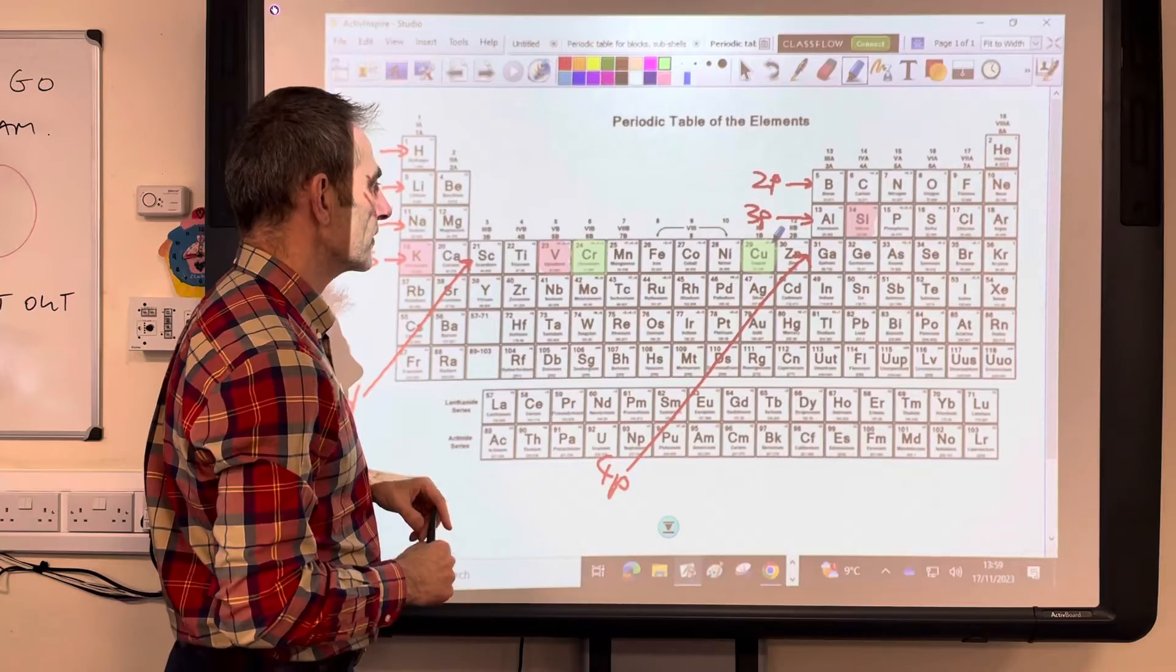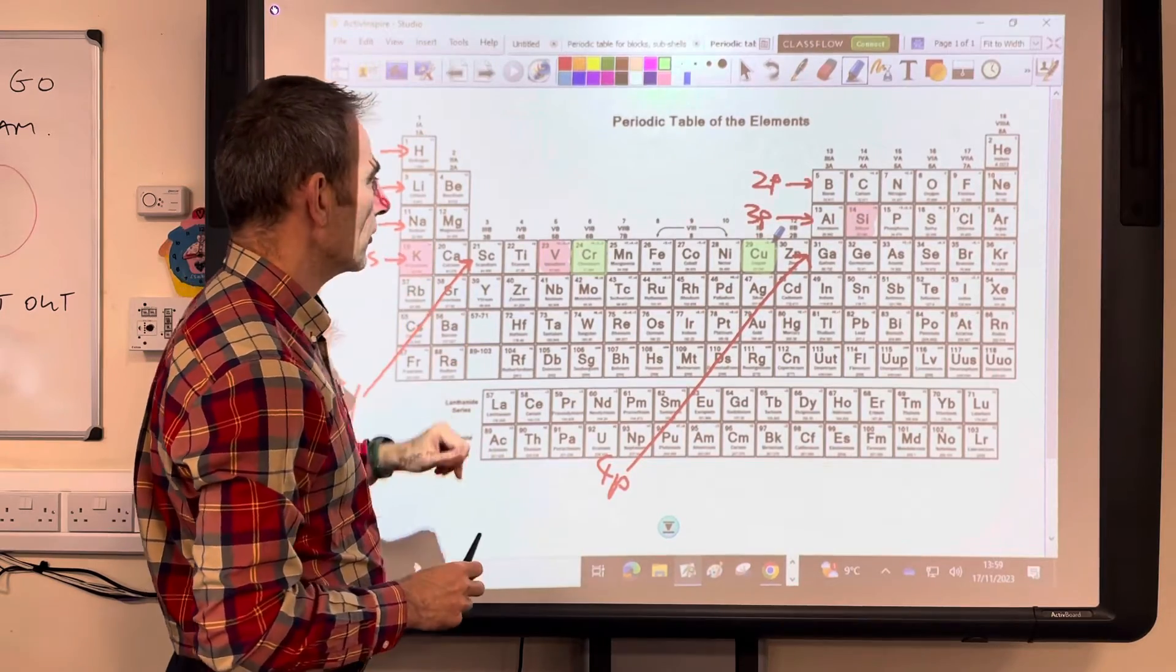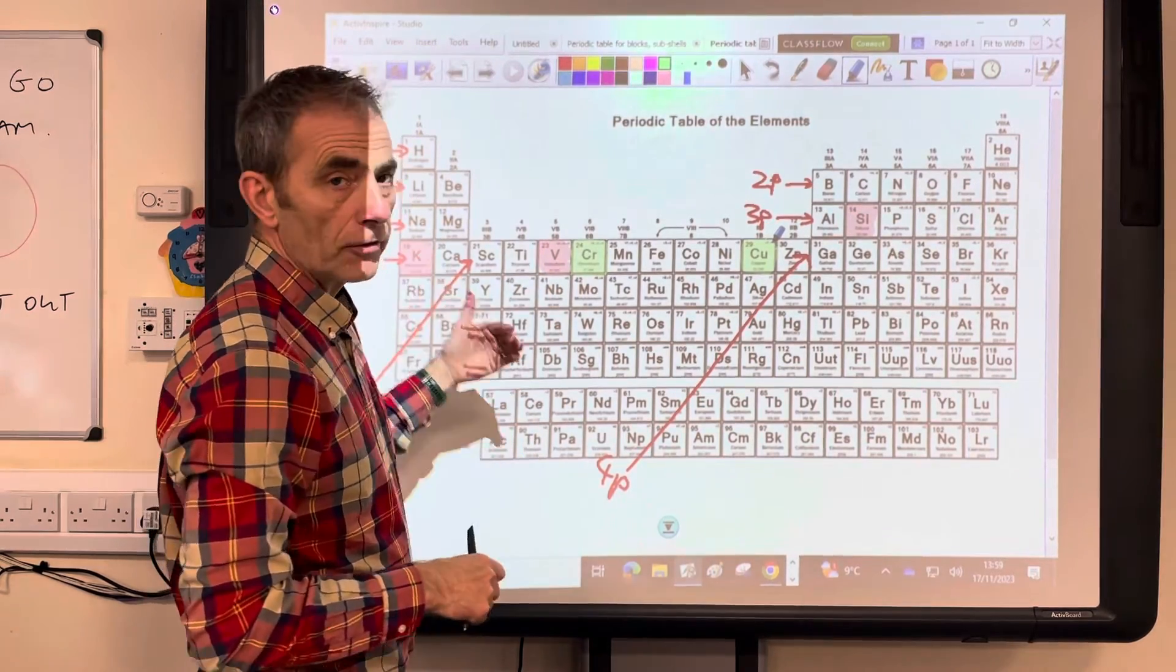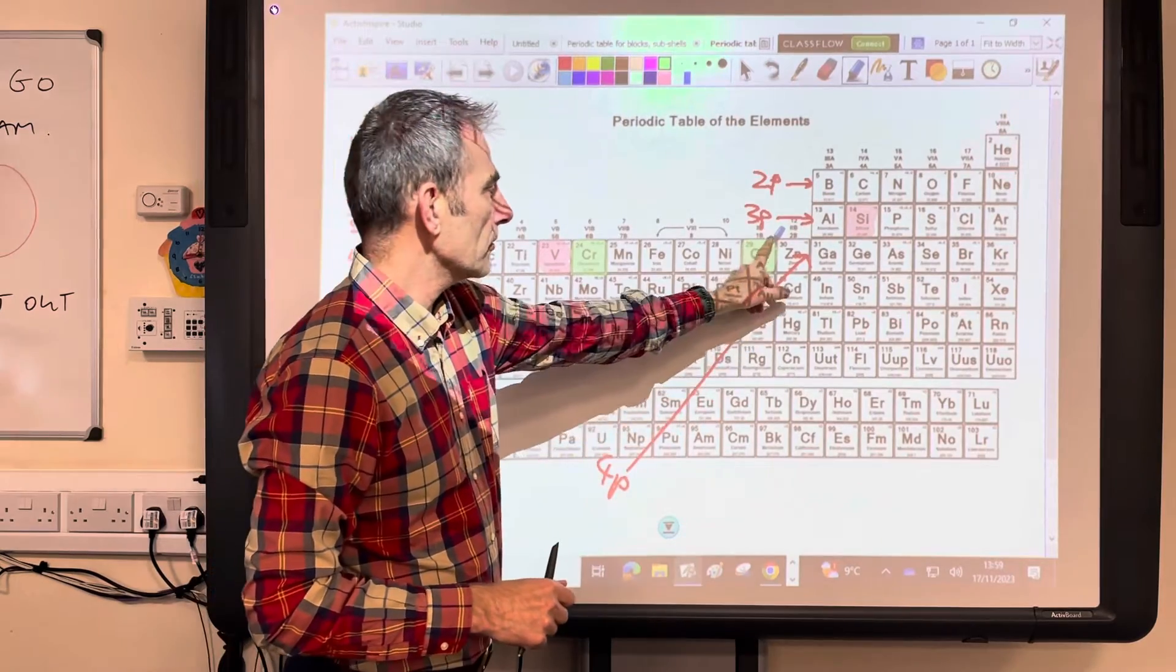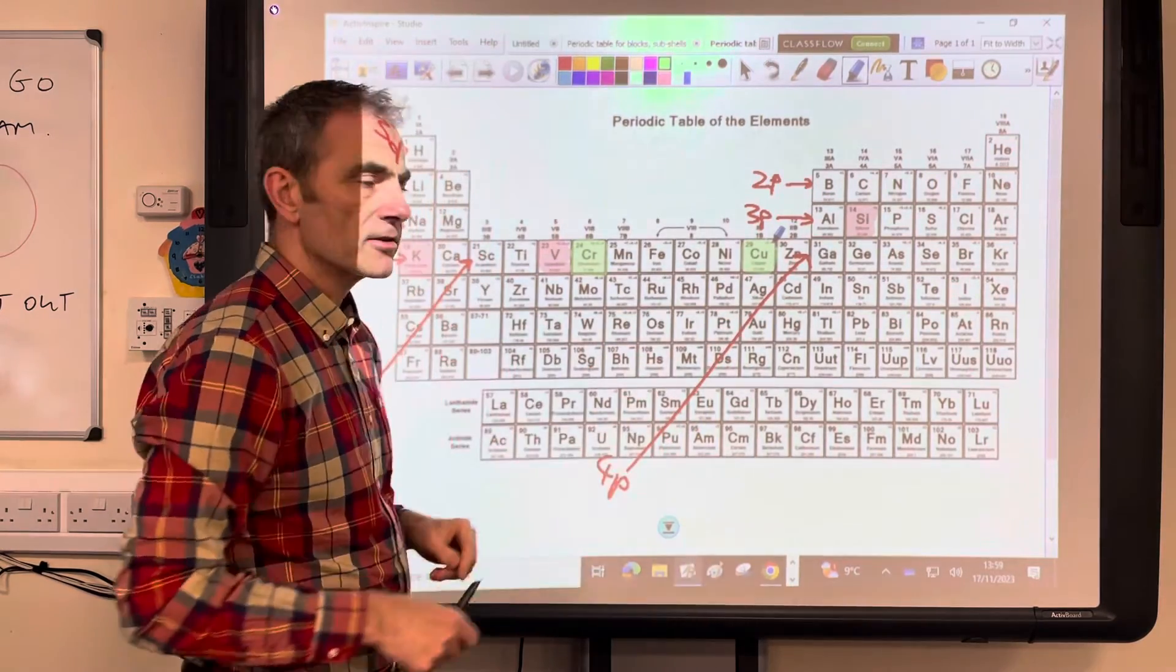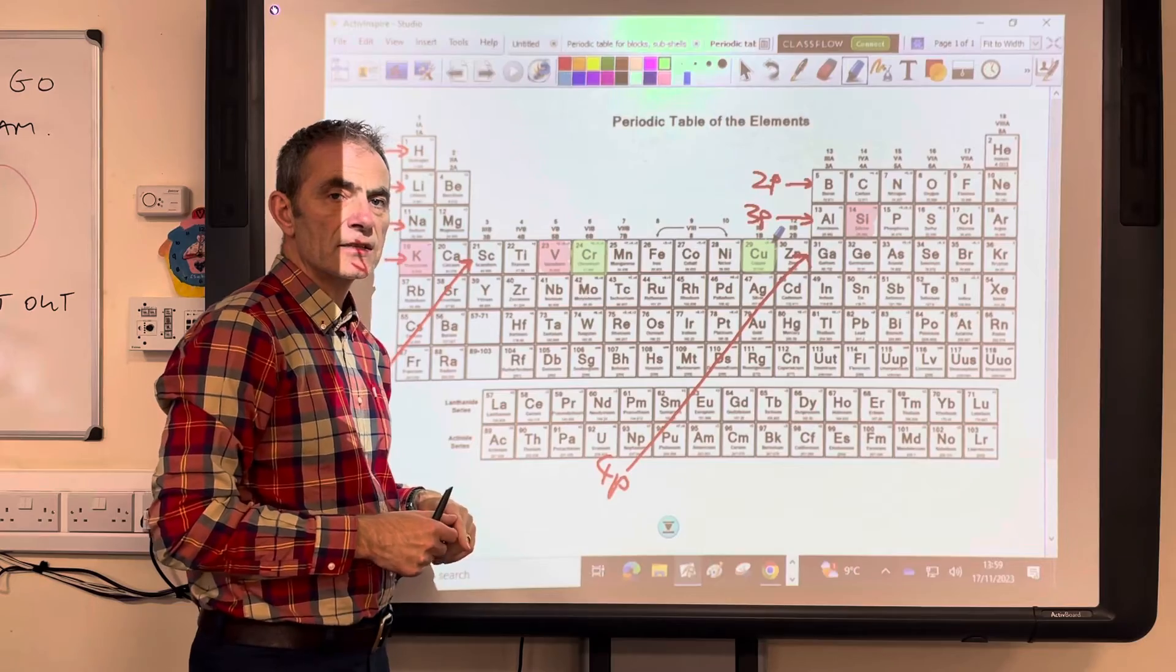Similar thing happens for copper. One of the 4s electrons jumps up. So it's 4s1. And that generates a full 3d subshell. So it's 3d10.